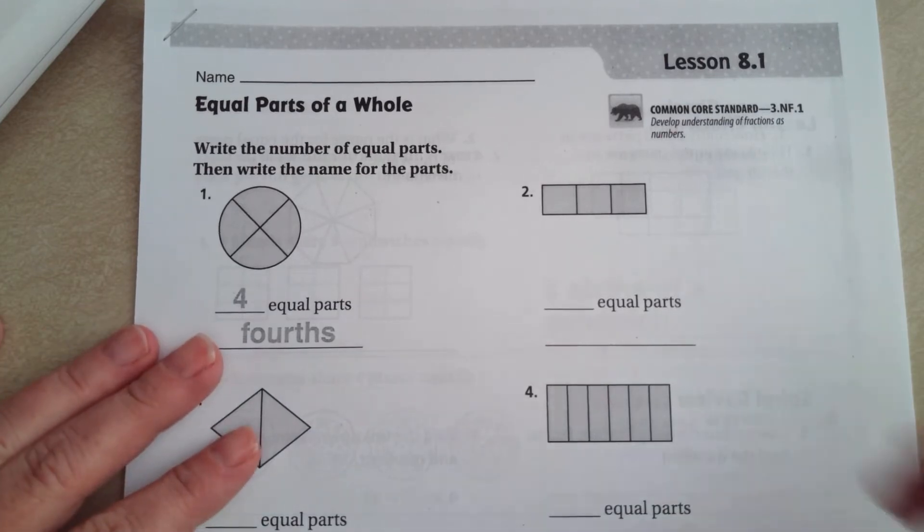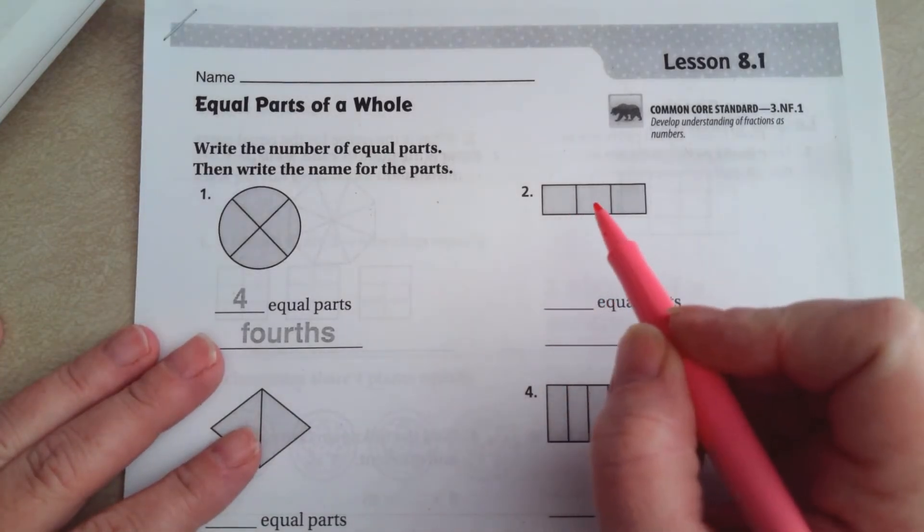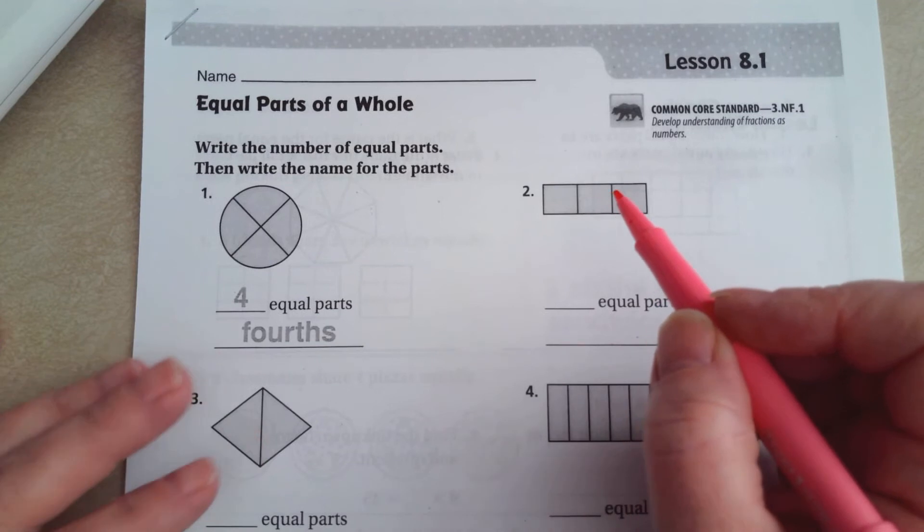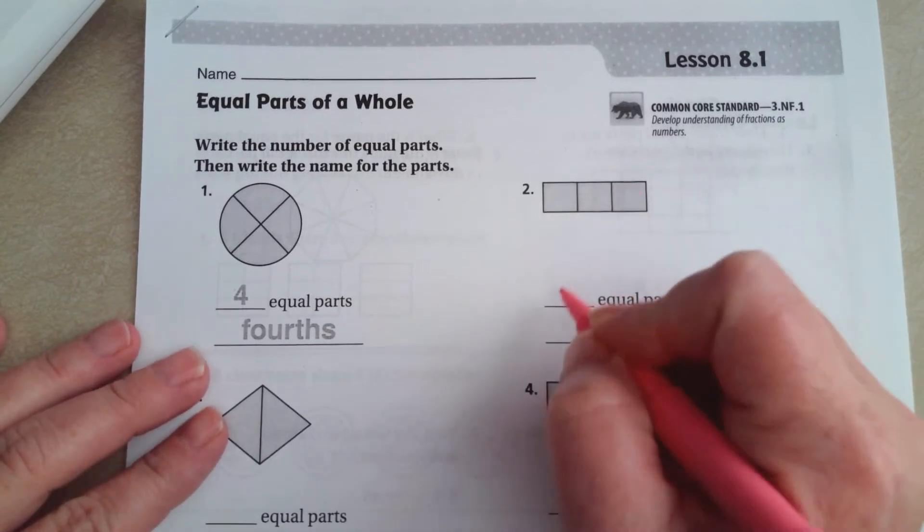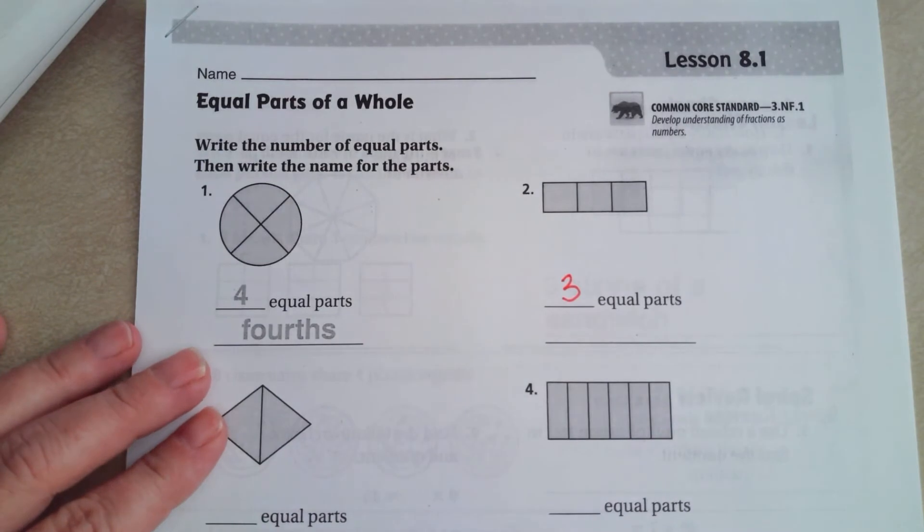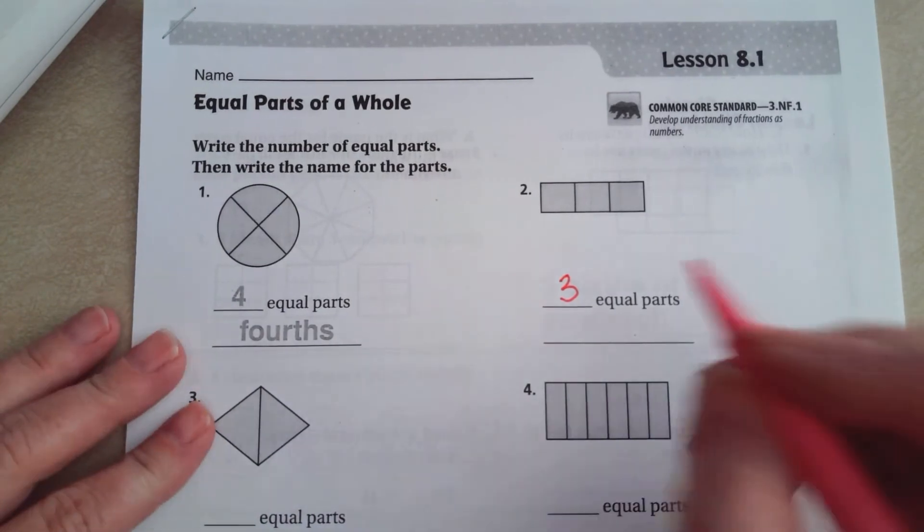We are going to be working on seeing the number of equal parts in each one. So, 1, 2, 3. So, there's three equal parts. Those parts are called thirds.